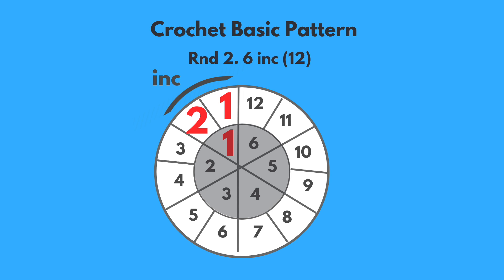The increased stitch is abbreviated as INC. Our round 2 instructions call for 6 increases and this will result in a total of 12 stitches as every increased stitch will make 2 stitches.